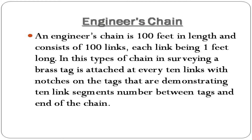Engineer's chain: An engineer's chain is 100 feet in length and consists of 100 links, each link being 1 foot long. A brass tag is attached at every 10 links, with notches on the tags demonstrating the number of 10-link segments between the tags and the end of the chain.